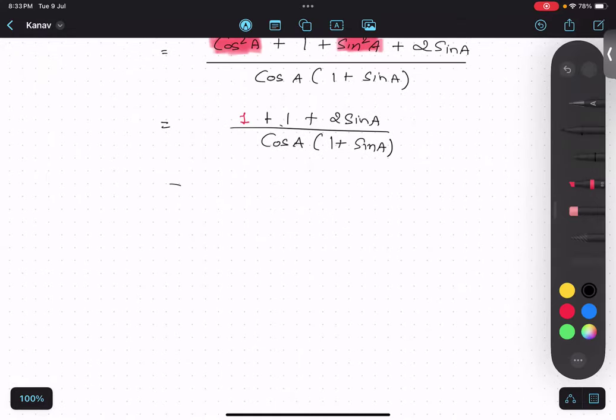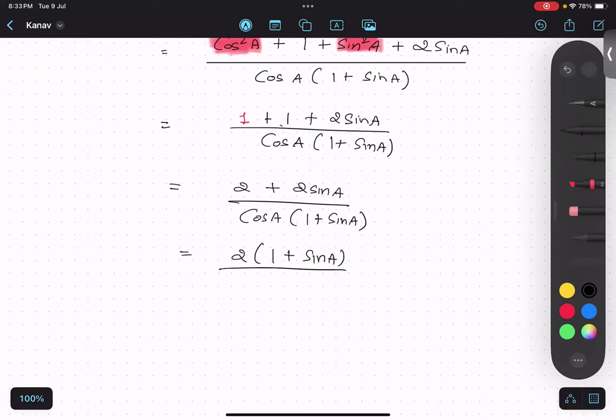So 1 plus 1 is 2, 2 plus 2 sin A, cos A 1 plus sin A. So 2 common. What is remaining? 1 plus - I told you now it will get cancelled. So you must be thinking, sir, you have done already all of these questions, so you know that.